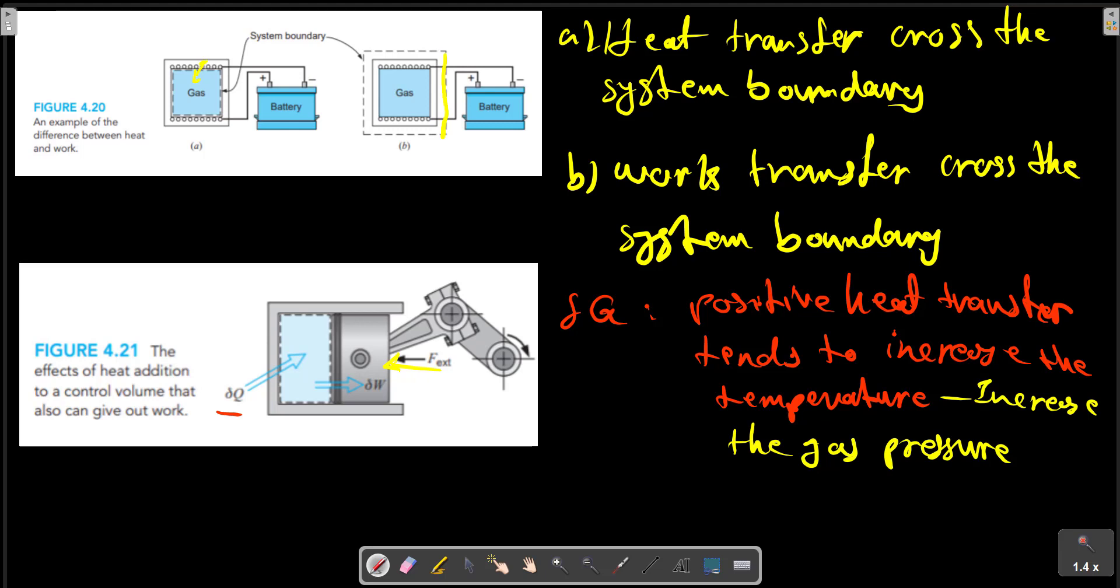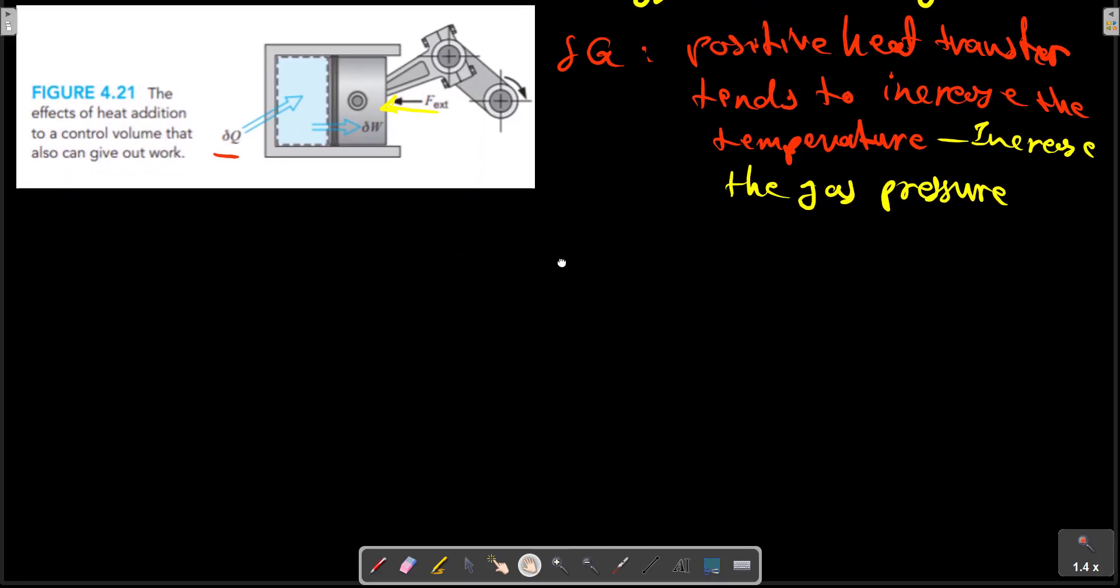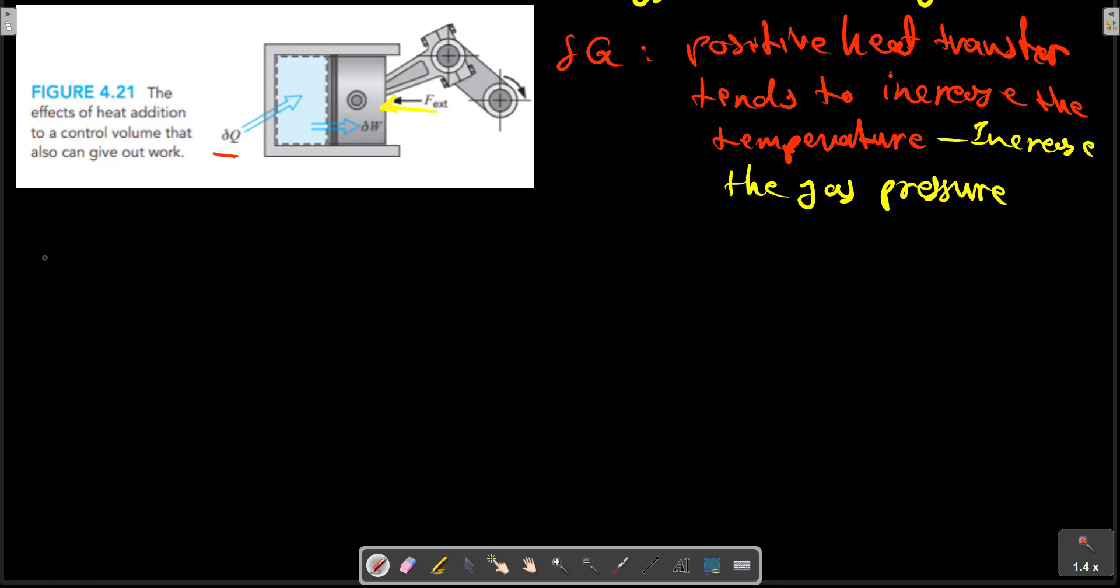Often, we want to evaluate a finite amount of energy transmitted as work or heat. We must integrate the previous relation. In order to perform the integration, we must know how the rate varies with time.